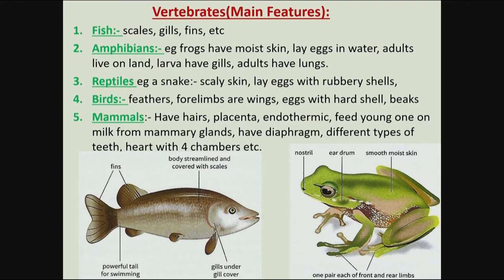The next group of vertebrates are the amphibians, like frogs. They have soft, moist skin. They normally lay their eggs in water, and adults can live on land. The larvae have gills, but the adult ones breathe using their lungs.